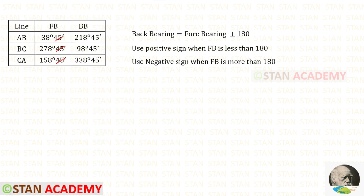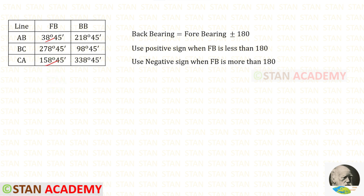We have found all of the forebearings. Now we are going to find the backbearings. The formula is forebearing plus or minus 180 degrees. We use the positive sign when the forebearing is less than 180 degrees, and the negative sign when the forebearing is more than 180 degrees. The two bearings less than 180 degrees require adding 180, while the bearing more than 180 degrees requires subtracting 180 to get the backbearing.